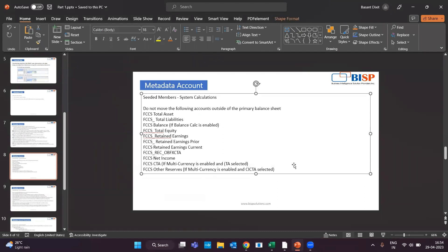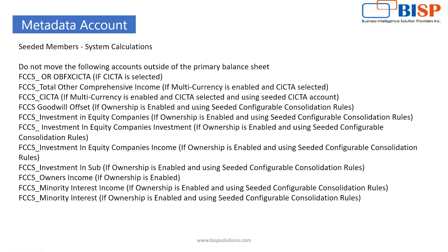It is recommended that we do not move certain accounts outside of our primary balance sheet. Accounts such as FX CI CTA — when CI CTA is selected — and the other listed members should not be moved out of the primary balance sheet hierarchy. Following this ensures smooth working of your FCCS application and your figures will come as expected.